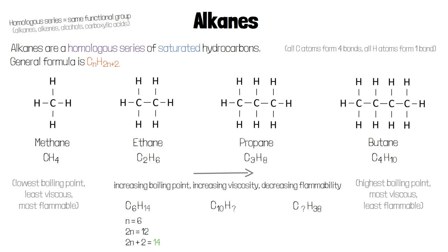If an alkane has 10 carbon atoms, N is 10, so 2N is 20, and 2N+2 would be 20+2, which is 22. That means an alkane with 10 carbon atoms will have 22 hydrogen atoms, so its formula will be C10H22.